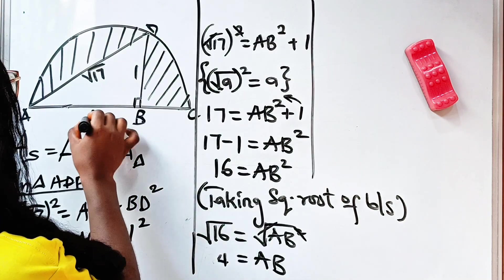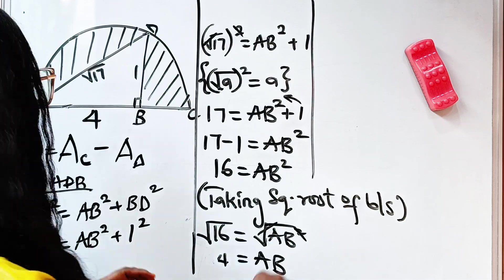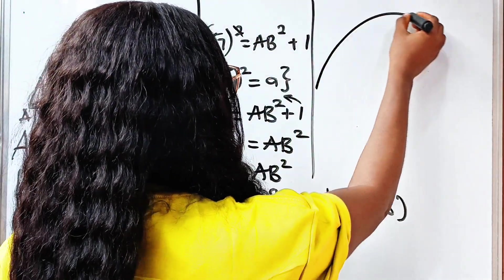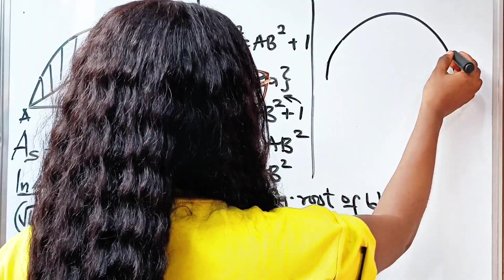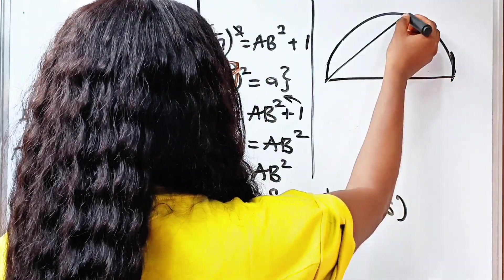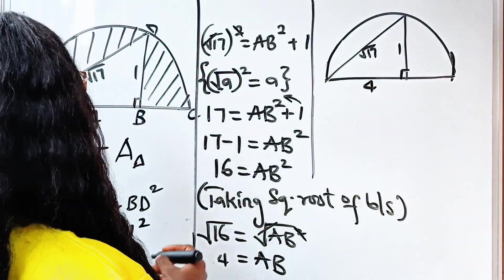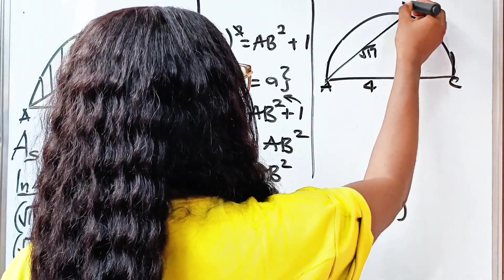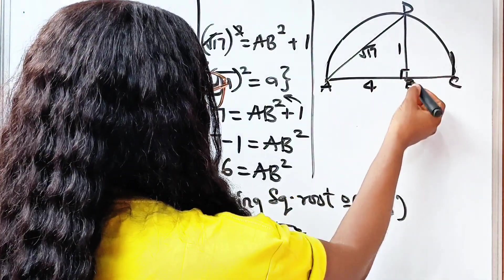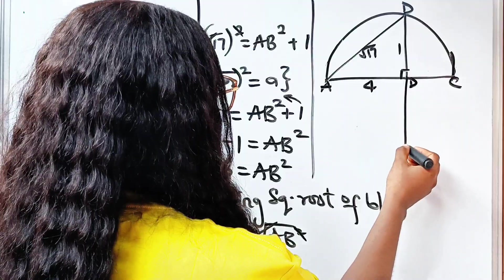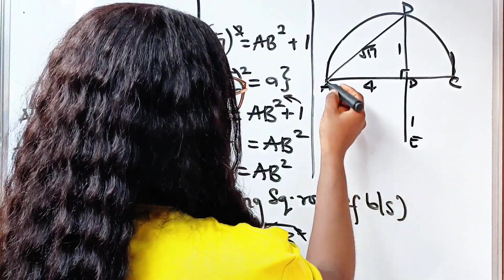I'm going to replace AB with 4. Now let me redraw this diagram. We have the semicircle — it's supposed to be curved — with √17, BD = 1, and AB = 4. Now let's complete the circle. Before we do, let's extend DB: draw a line equal to DB, call this point E, and let DE equal 1. Now let's complete the circle.